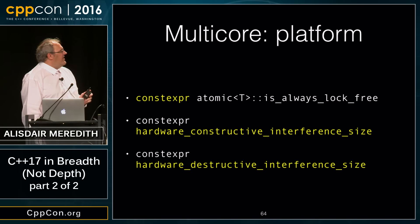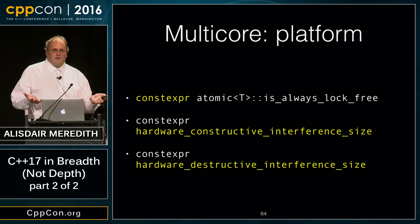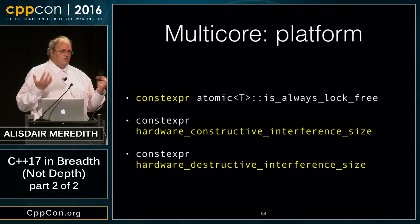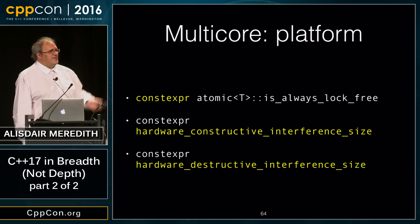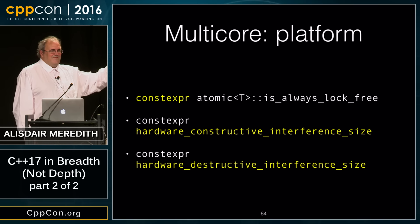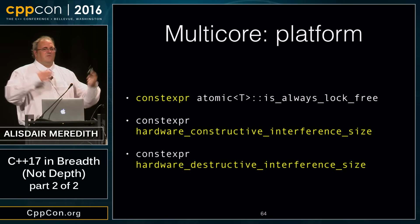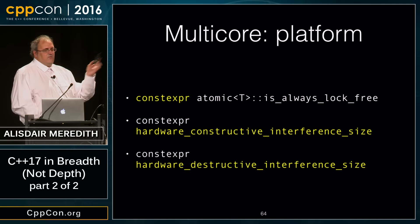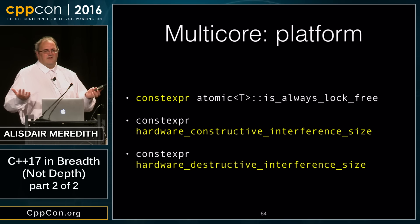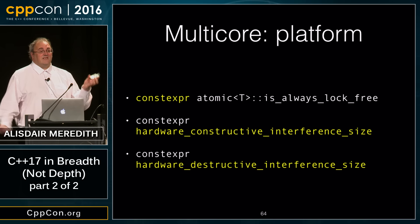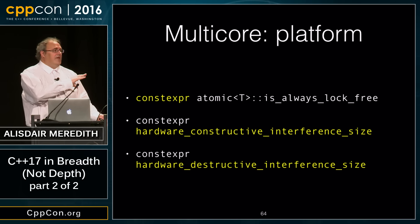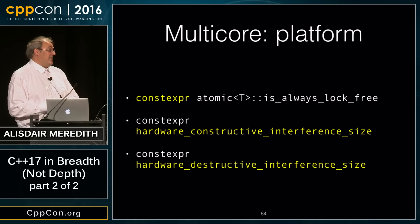We now have constexpr is_lock_free for atomic types. Prior to C++17, the function querying lock-freedom wasn't constexpr, so it was a runtime dispatch. Now with constexpr and if constexpr, the compiler can optimize that away or go down entirely different branches of logic.